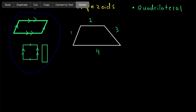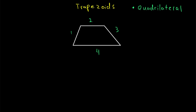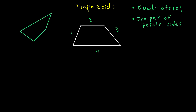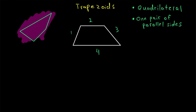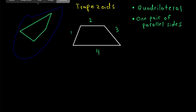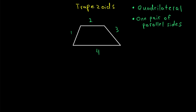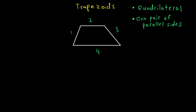What makes a trapezoid special is that a trapezoid has only one pair of parallel sides. So instead of having no pairs of parallel sides, like this quadrilateral here, or having two pairs of parallel sides, trapezoids have only one pair of parallel sides.